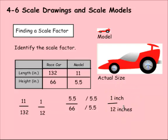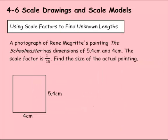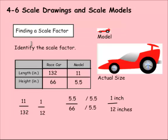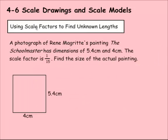You don't have to specify units when they're the same, but when they're different it's really important to include them. Now let's use a scale factor. We have a photograph of René Magritte's painting, The School Master, which has dimensions of 5.4 centimeters and 4 centimeters. The scale factor is 1 to 15 — find the size of the actual painting. Remember: the model goes on top and the actual size goes on the bottom. Here the photograph goes on top and the actual size on the bottom, so the scale factor is 1 to 15.